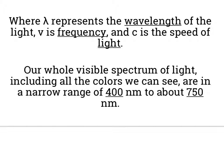Now our whole visible spectrum of light, all the colors we see, are only in a narrow range of about 400 nanometers to about 750 nanometers. So there are many other wavelengths like x-rays, UV rays, microwave rays, that are different wavelengths and frequencies. But the light that we see is between about 400 and 750.